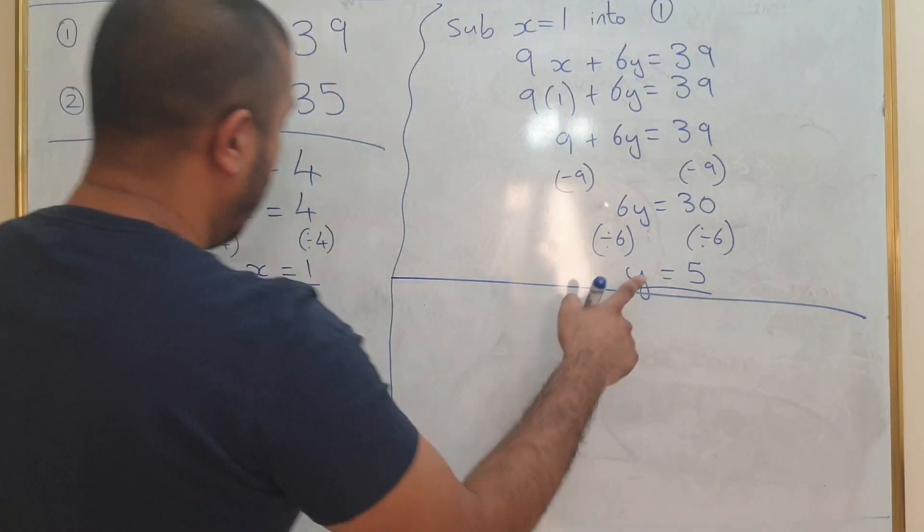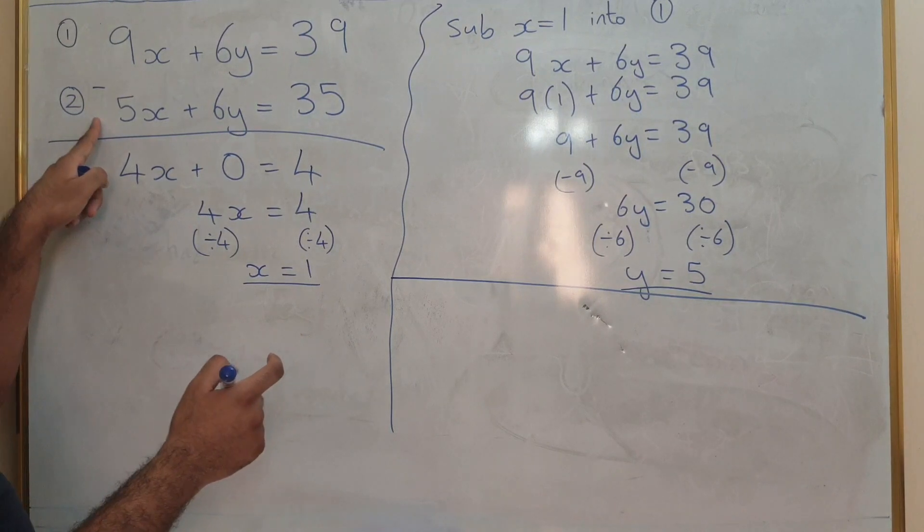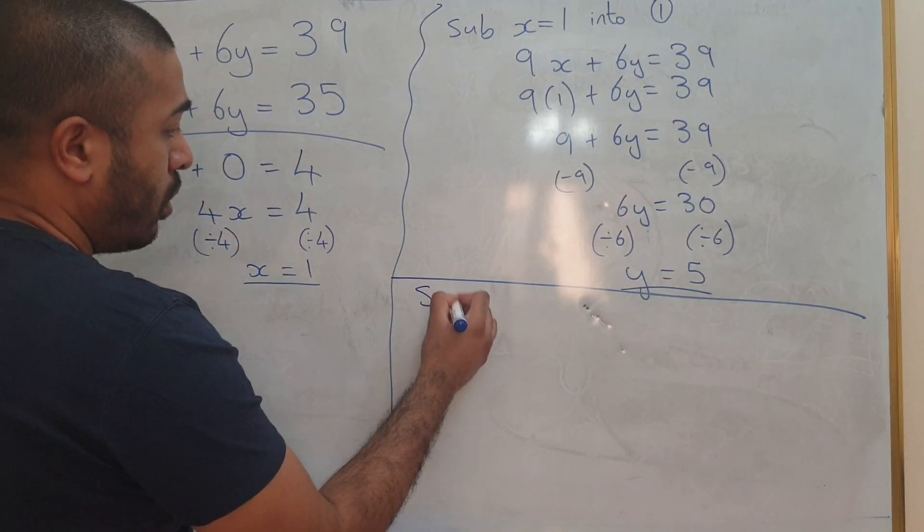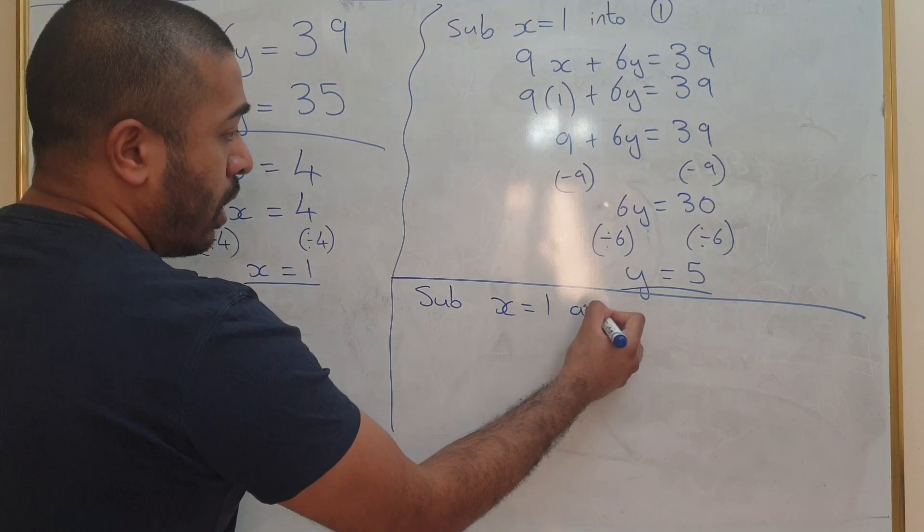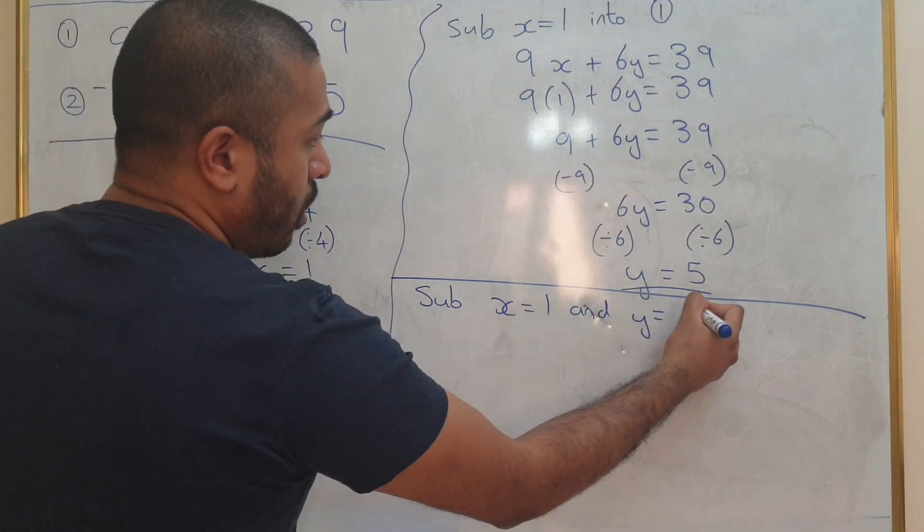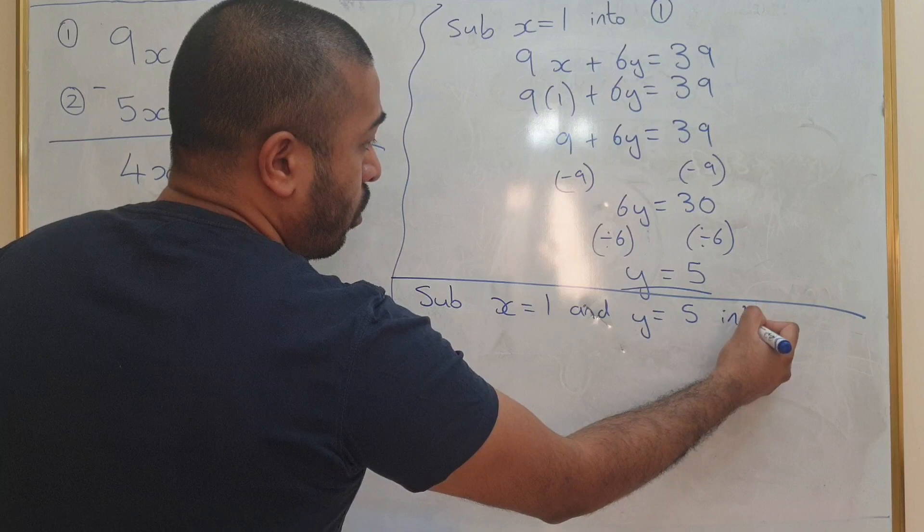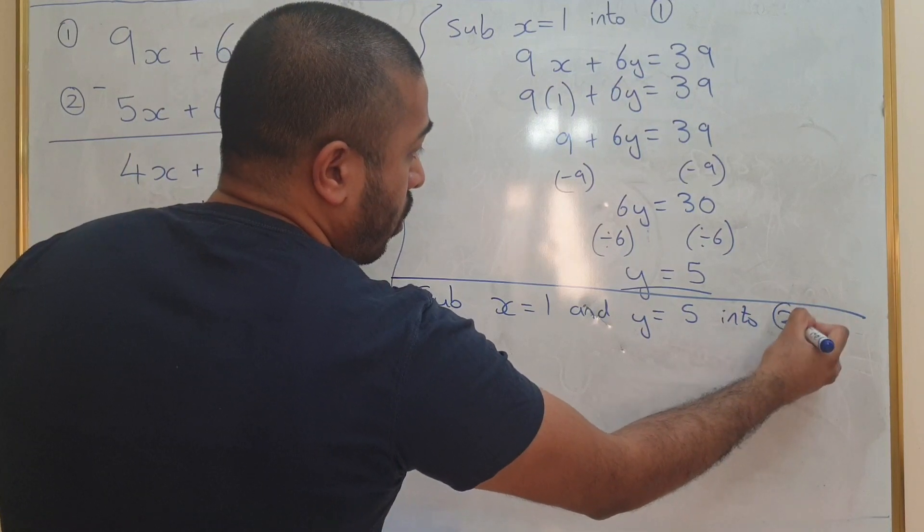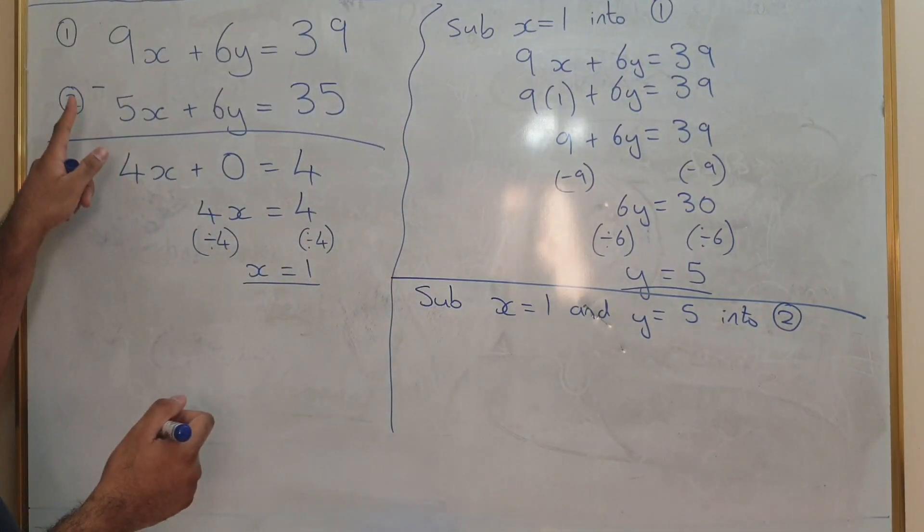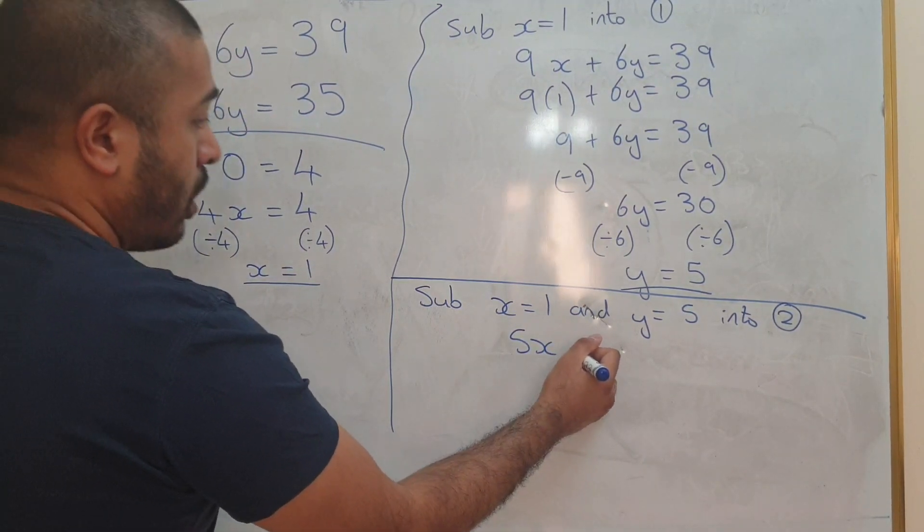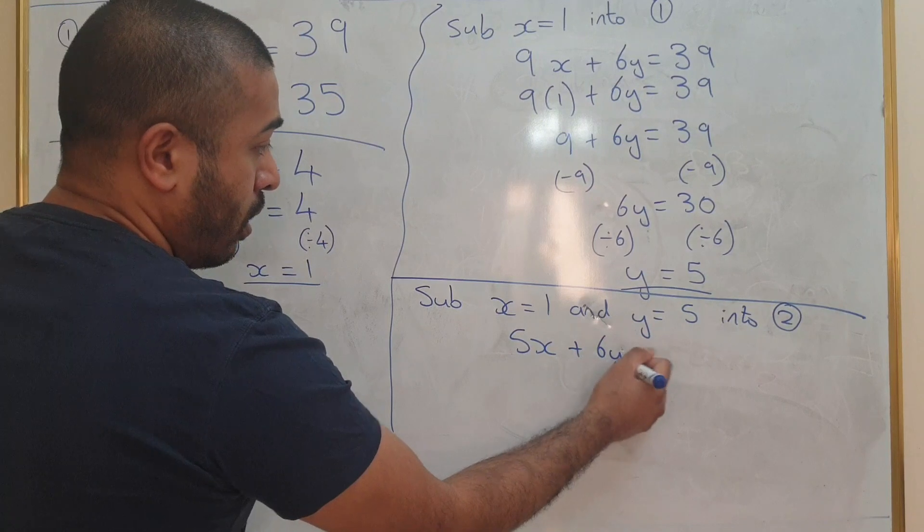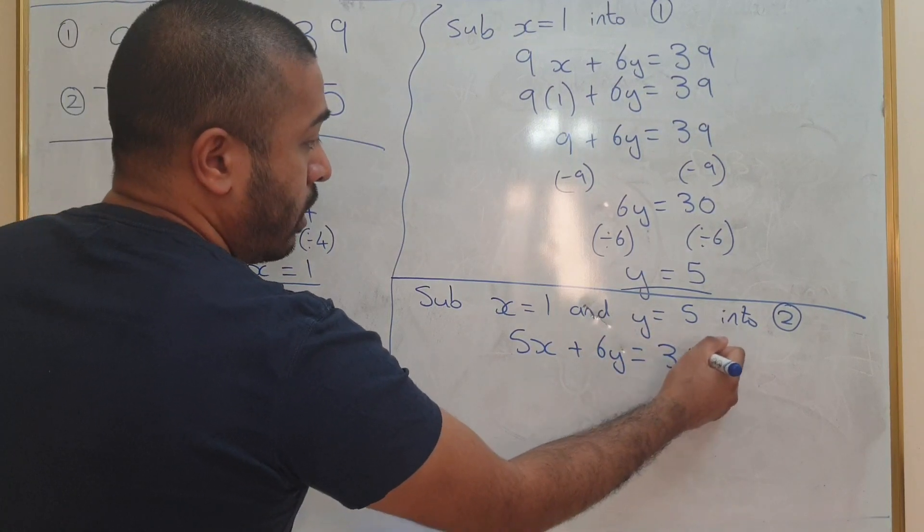You need to substitute these two into equation number 2. So, sub x equals 1 and y equals 5 into equation 2. Equation 2 is 5x plus 6y equals 35.